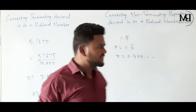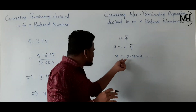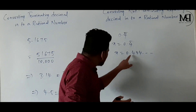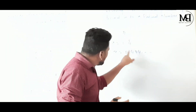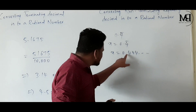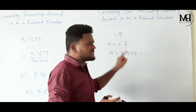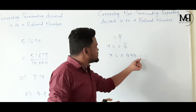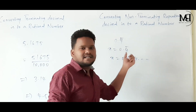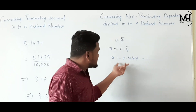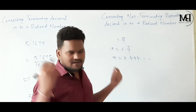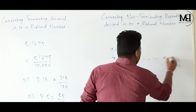Let us follow these steps. Observing 0.4 bar: the decimal point is already before the digit that is repeated — 4 is repeated and the decimal point is there before 4. So we can consider X = 0.4̄ as equation 1.